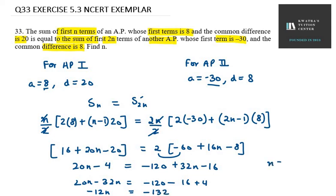Now, what is the n value? 132 over 12, so you will get your answer as 11. n equals 11.